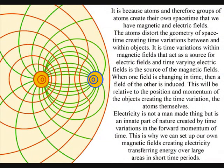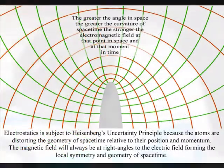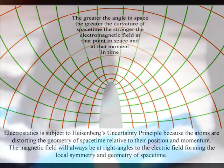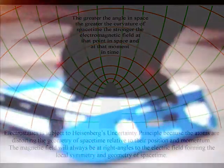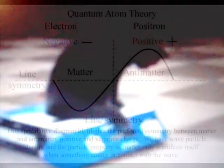A time-varying electric field acts as a source of a magnetic field, and the time-varying magnetic field is the source of electric fields. When either field is changing in time, then a field of the other is induced. This will be relative to the position and momentum of the objects creating the time variation, the atoms themselves.